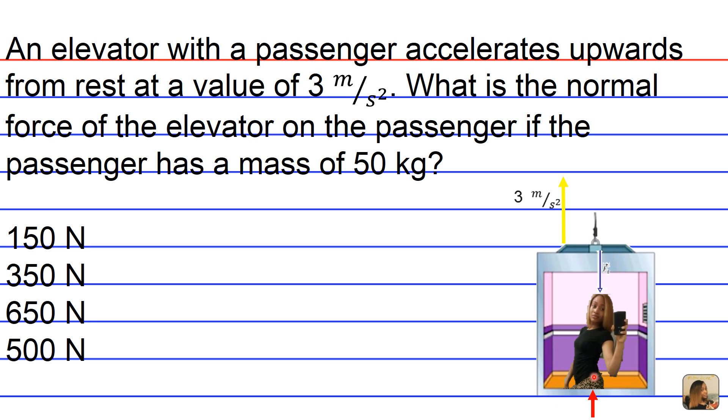But the net acceleration of the passenger is the same as the elevator, which is 3 meters per second squared. And the net force of the passenger is going to be the product of the mass of the passenger, which we're told in the question stem is 50 kilograms, times the net acceleration, which is not only 3 meters per second squared, but also the downward g acceleration of 9.8 meters per second squared.